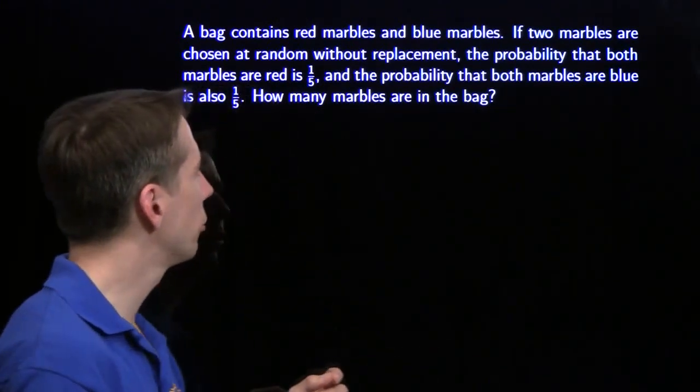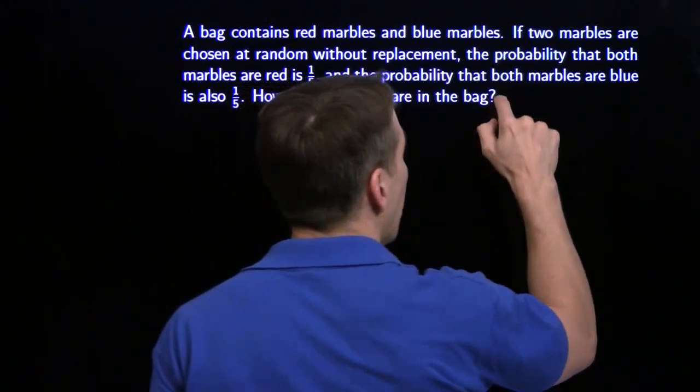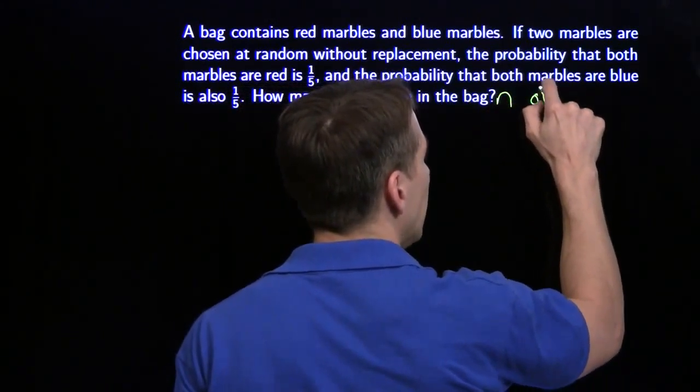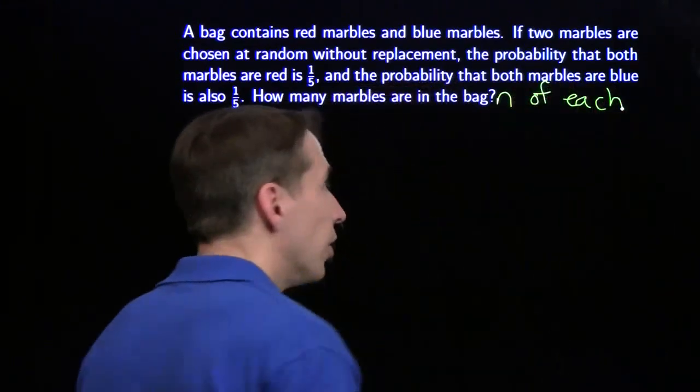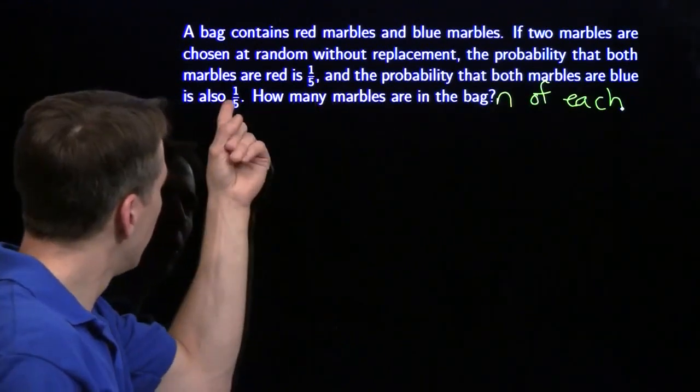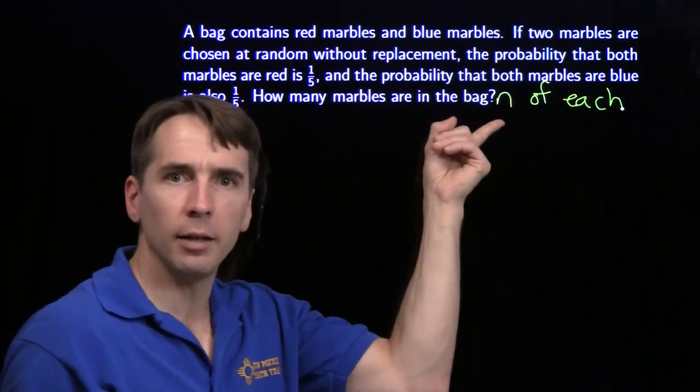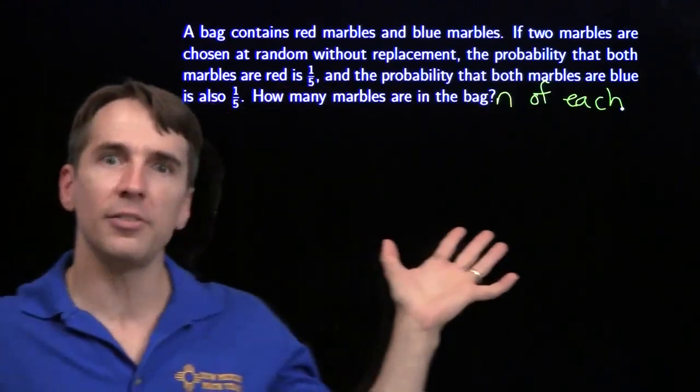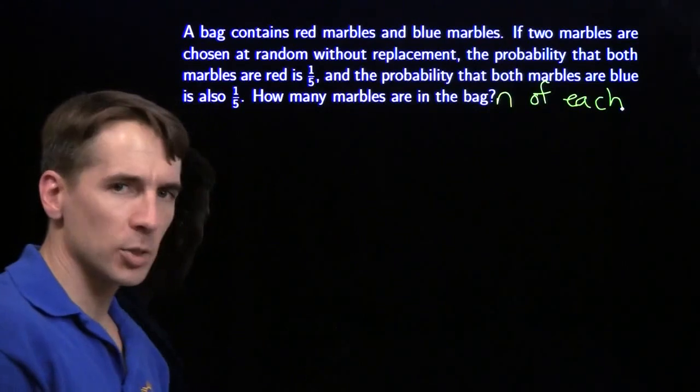Variables are good at unknowns. I'm going to assign a variable, but I'm going to assign it to the number of red, which is also the same as the number of blue. It lets me bring in a variable, it lets me use the fact that I have the same number of each, and I'm going to write an expression for the probability of getting two reds. I'm going to write that in terms of n, because then I can set that equal to one-fifth, I'll have an equation, I can solve equations.